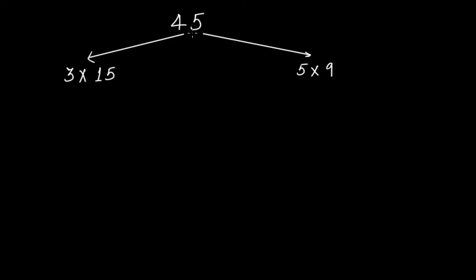We have the number 45, and we have written it in the form of its two factors: 3 multiplied by 15. 3 is a factor of 45 and 15 is a factor of 45, because 3 times 15 is 45 and 15 times 3 is 45. These both are factors that divide 45 completely — your remainder will be 0. In the same way, 45 can be written as 5 multiplied by 9. So 3 and 15 are both factors of 45, and 5 and 9 are also factors of 45.